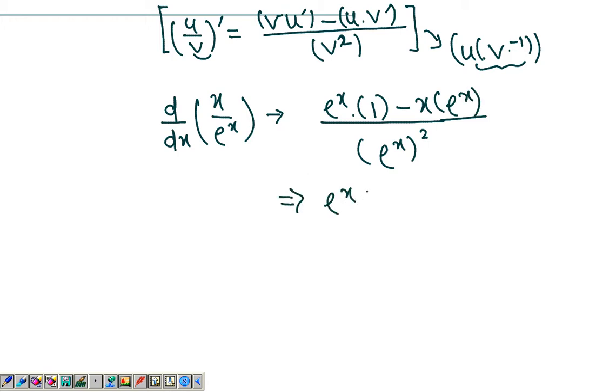So you get e to the x times 1 minus x over e to the 2x, or e to the x squared, which gives you e to the x in the denominator. You're left with 1 minus x over e to the x.